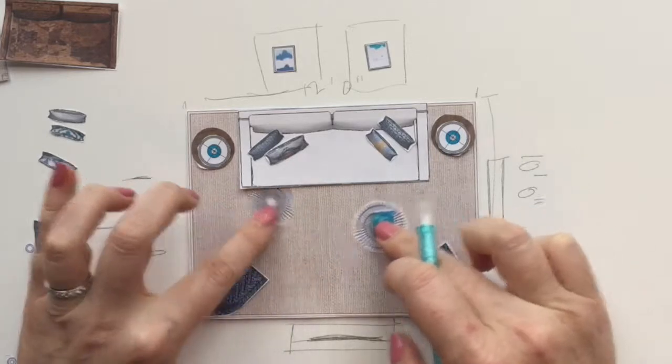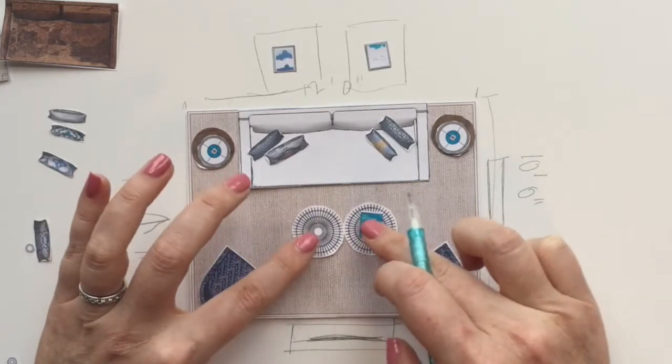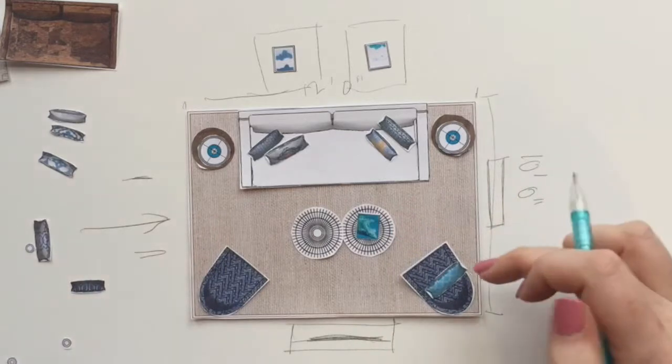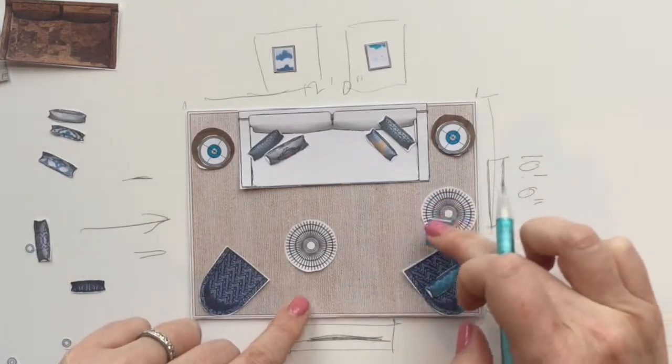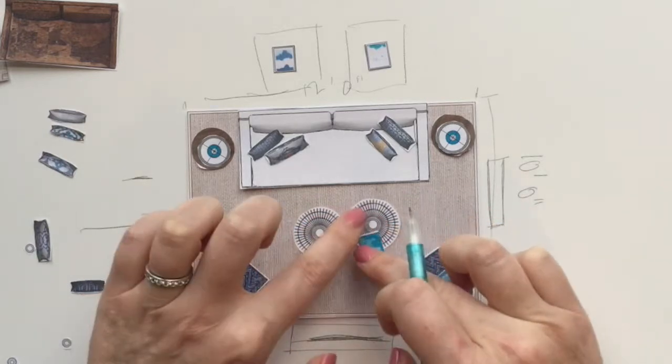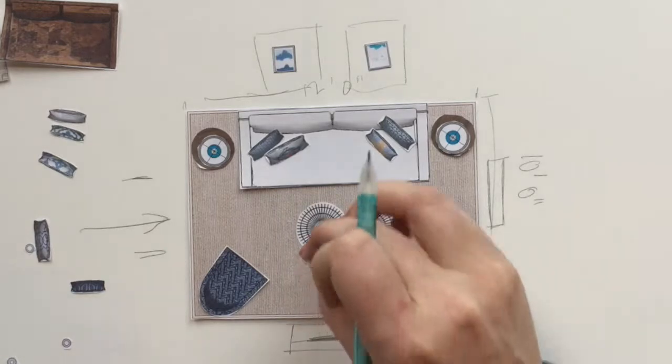And then these are those movable rattan tables. And what we've done is put them together and created the illusion of a coffee table, but you could always bring them around. You could move one here as extra seating. So I love this versatile idea, and you could put books on them, a little stack of books.